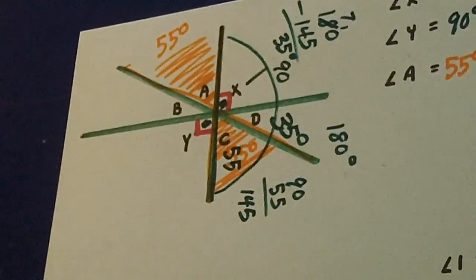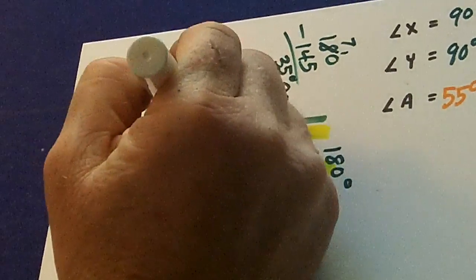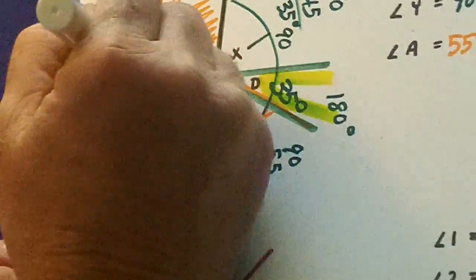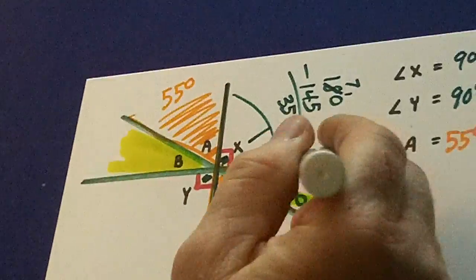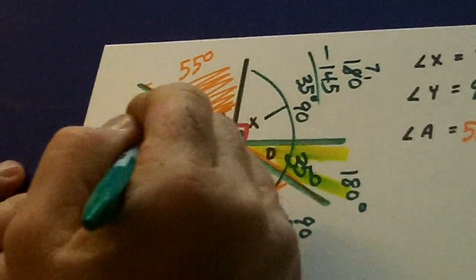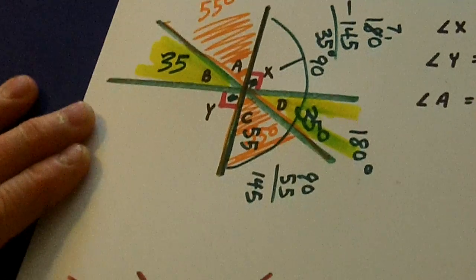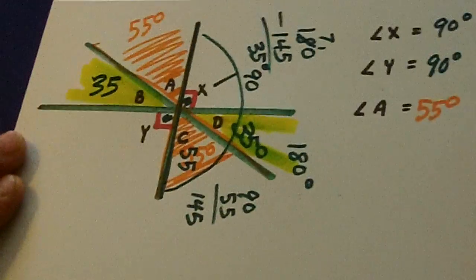Now watch this. D is this and D is vertical to B. You should see that D is vertical to B. So this 35 is that 35. B and D are both 35.